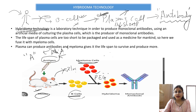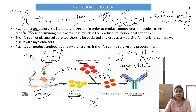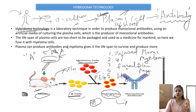After fusion in PEG media, we get five types of cells: unfused plasma cells, unfused myeloma cells, fused plasma cells (two plasma cells fused together), fused myeloma cells, and the fifth type — hybridoma — which is the mixture of plasma cell as well as myeloma cell. We want to keep the hybridoma cell to produce monoclonal antibodies, but the question is how to recognize it from among the five types.